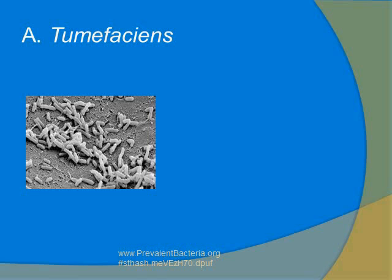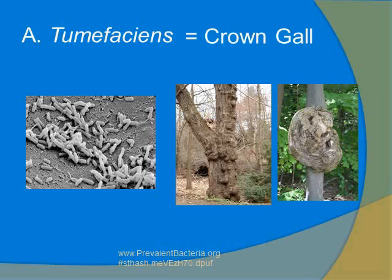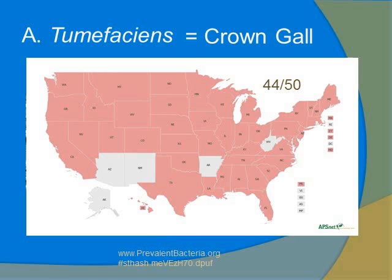Agrobacterium tumefaciens is a very common bacteria that you might find in your backyard or even on your skin. It comes in a very standard cylindrical shape. But when it infects plants, it has very unique effects. It's called crown gall disease, and it takes the form of tumors that come up on the surface of plants. The bacteria infects the plants often through the roots or on the stem, wherever there is an injury or an opening in the bark of the plant. Agrobacterium is very prevalent — it's considered prevalent in 44 out of the 50 U.S. states, so regardless of where you are, you can find Agrobacterium.